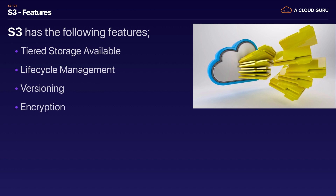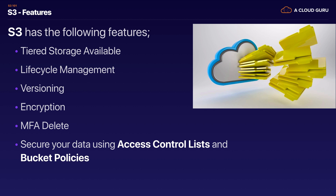You're able to encrypt your objects at rest, and there are different encryption mechanisms which we'll cover in another lecture. You're also able to use multi-factor authentication for deleting objects — when this is turned on, anyone deleting an object will need two-factor authentication, like Google Authenticator. You also secure your data using access control lists and bucket policies, which we'll cover later in this section.